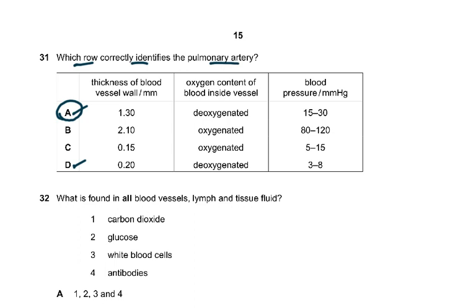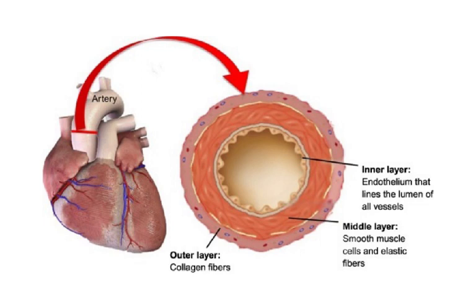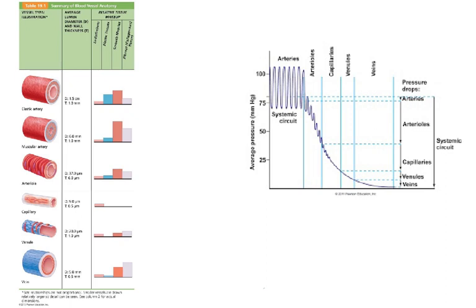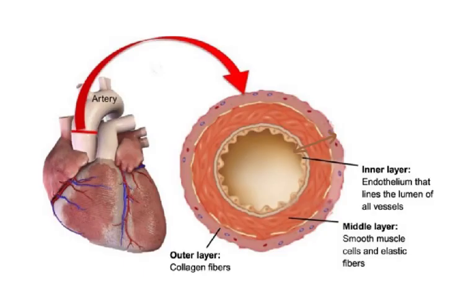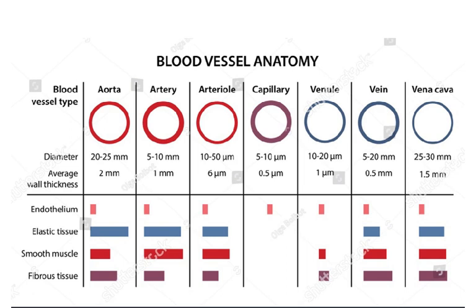Which row correctly identifies the pulmonary artery? It arises from the right ventricle carrying deoxygenated blood, so the only two possible answers were A or D. Blood pressure in the right ventricle when pumping into the pulmonary artery is higher than in the artery itself, so the answer is A. Blood vessels have three layers: endothelium, smooth muscle, and collagen. Wall thickness varies — elastic arteries are about 1 millimeter thick, down to 0.5 micrometers for capillaries. Please pause to memorize these values.